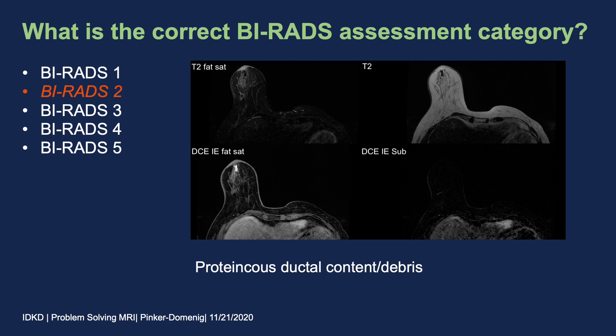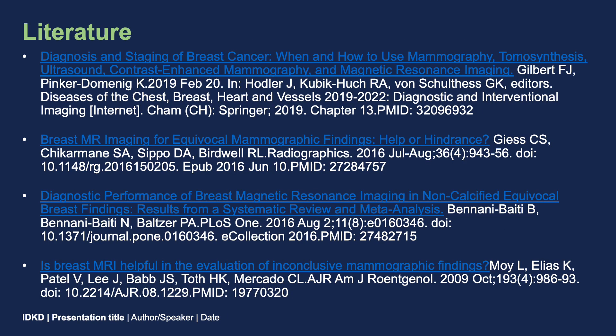MRI for problem-solving, with the right indication, can be very contributory. You must be aware that if a finding is suspicious for malignancy, an MRI is not a problem-solving MRI — it would rather confirm your suspicion, and the question is whether you really need it. By definition, a true problem-solving MRI is when the finding is equivocal and conventional imaging cannot provide the answer. If you want further reading, here are several papers I can highly recommend.